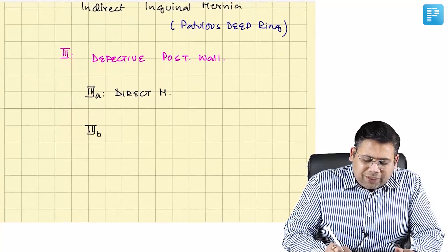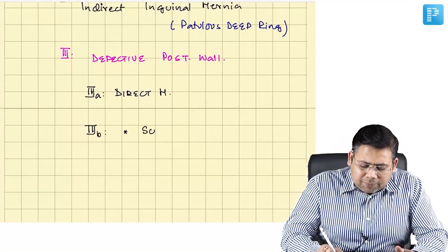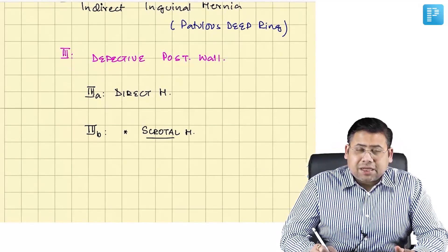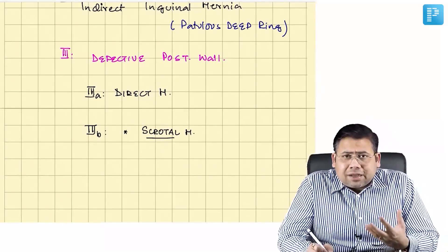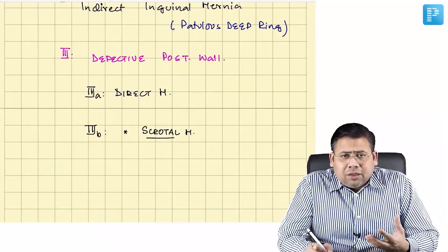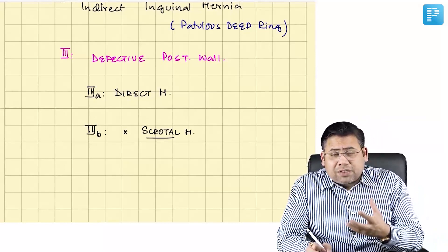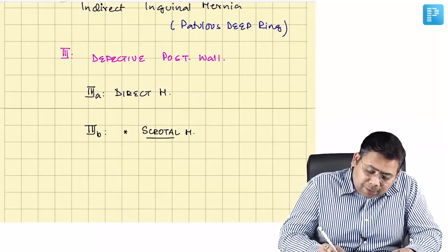In Type 3B you might get to see a variety of hernias. One amongst them is a scrotal type of hernia — a complete hernia where the hernial contents or hernia loops actually go to the base of the scrotum.